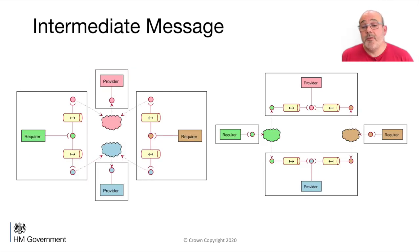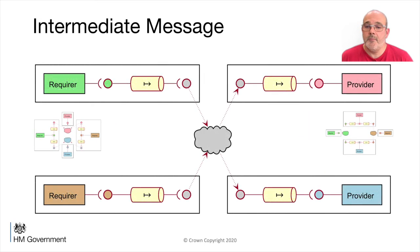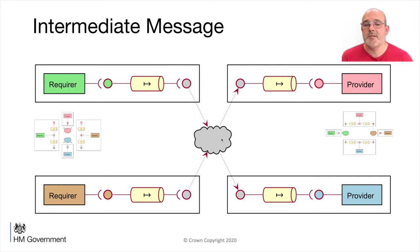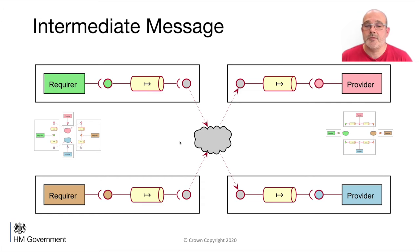So if we then distribute that, these are our two main ways of deploying a distributed system. The requirer lives with its mapping, you deploy the mapping as part of the requirer, and that does the conversion to the common message. That message then goes on to each of the providers, and their mappings do their job. As you can see, it's a lot simpler way to deploy it, and there's only one message traversing the middleware.